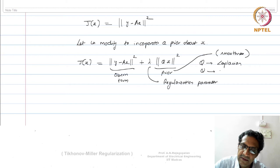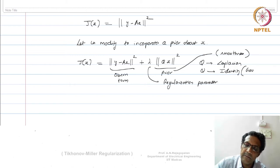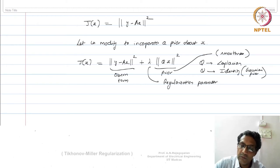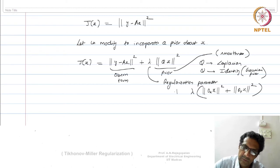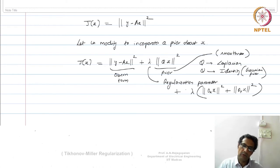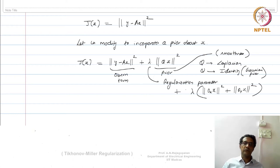You can also go for Q equal to identity, in which case you have ||x||², which is like a simple Gaussian prior. You can also go for other forms of Q — you can have two terms, one like the norm of the first derivative of x squared, plus the second derivative squared, multiplied by λ. The whole idea is that you are bringing in prior knowledge about x, because you believe that x is locally smooth. If you know more about x, you can throw all that into this framework.